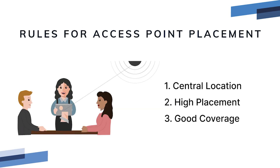Every restaurant has a unique layout, but there are some rules you can follow about access point placement to ensure a good signal. Rule one: access points should be centrally located in the area where the POS tablets are located — line of sight is preferred, and if you can see an access point from where you're standing you should be getting a good signal. Rule two: high placement helps to avoid barriers and increases the chance of line-of-sight connectivity.